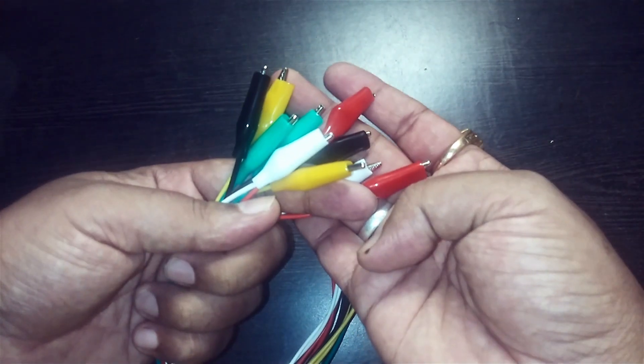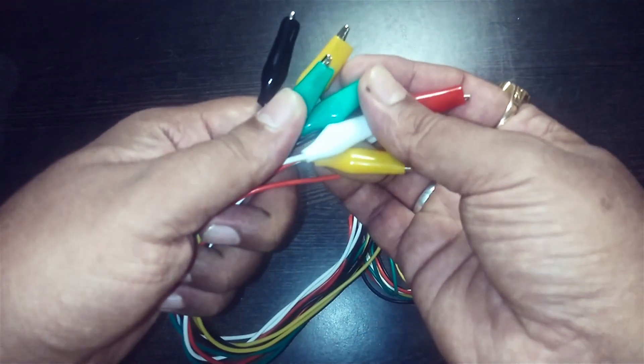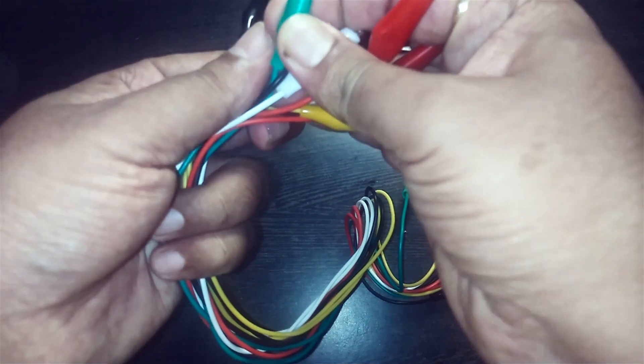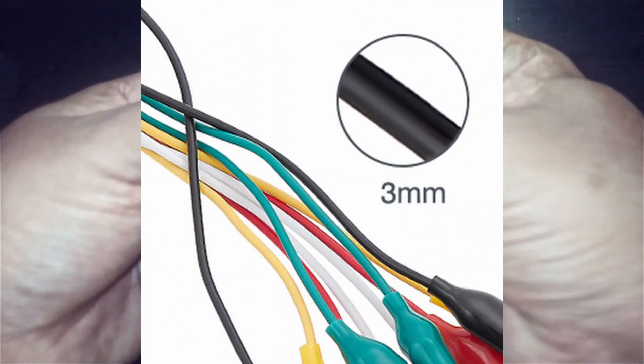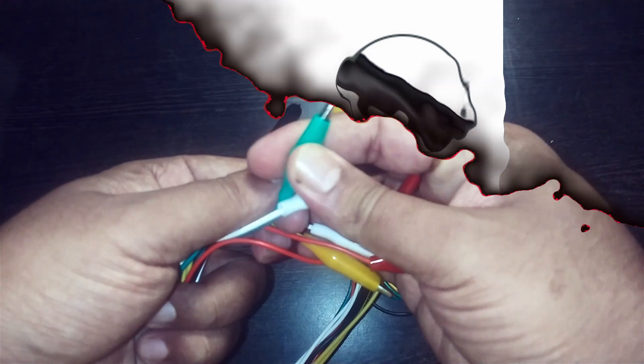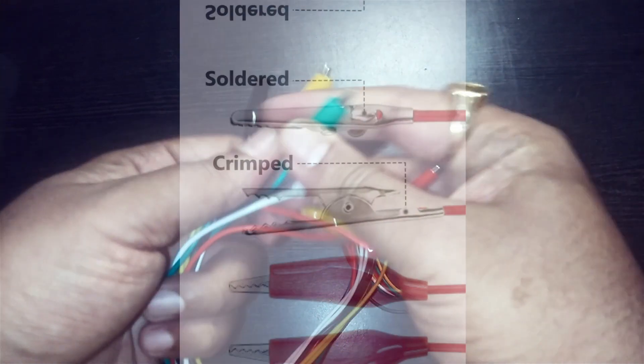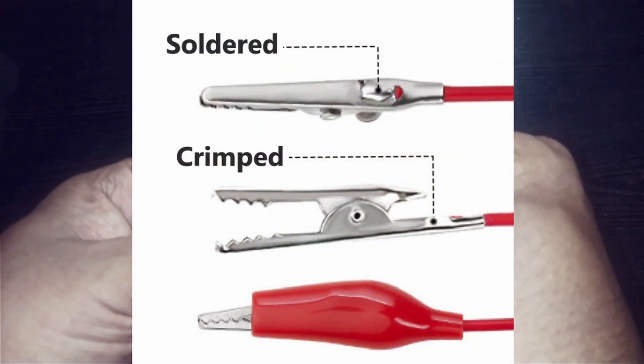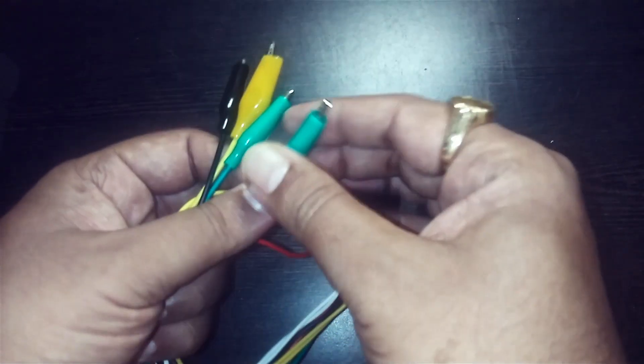A strong wire of gauge 22 AWG copper with PVC insulation of length 20.5 inches is soldered and crimped to the alligator clips securely to ensure good conduction.